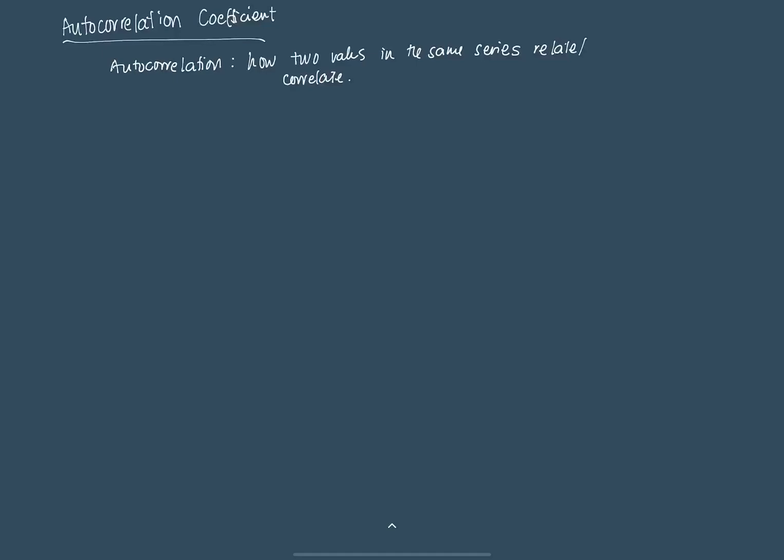Now, in basic econometrics, if you know the underlying assumptions of the classical linear regression model, we assume that autocorrelation is non-existent in the error term, or that the autocorrelation there should be zero in order for an assumption to be met. In time series, we have to adhere to some degree of autocorrelation because it's primarily given in our data.